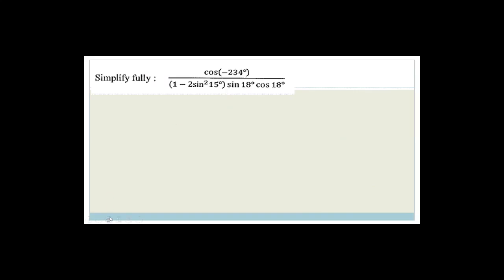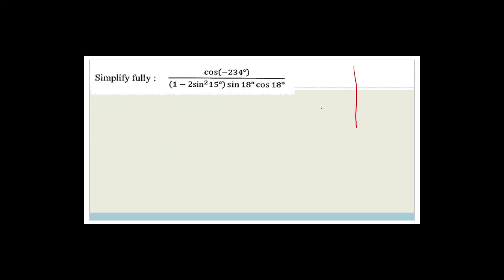Next question: simplify fully. We've got cos of minus 234 degrees, times 1 minus 2 sine squared 15 degrees, times sine 18 multiplied by cos 18. Let's worry about the minus 234 degrees first — we need a CAST diagram.